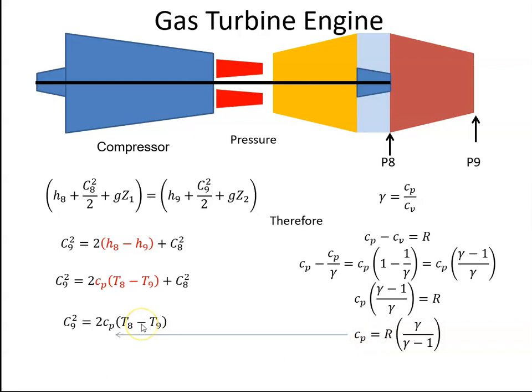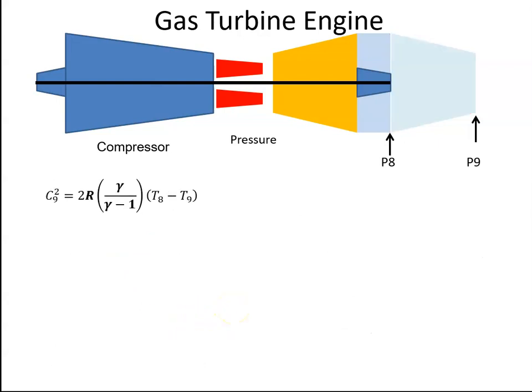Once we're there, we know that from the universal gas law P by V is equal to MRT, but this is the specific volume so it's just RT. We get an equation for RT8 and RT9, so we have R by T8 T9 and we can substitute P8 V8 in for there.